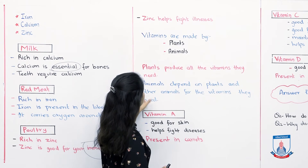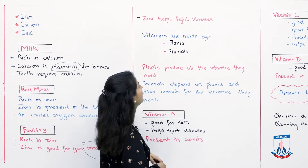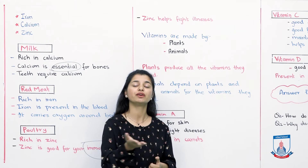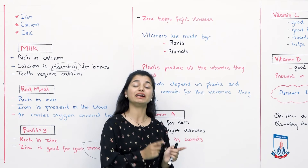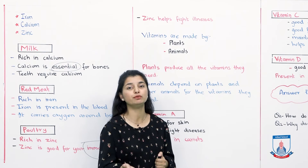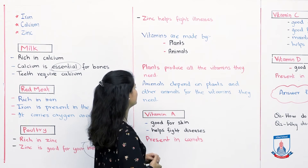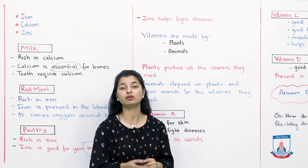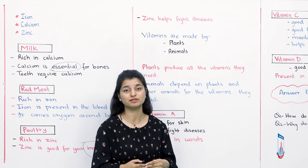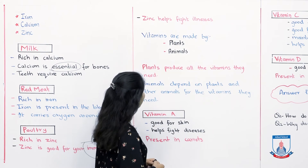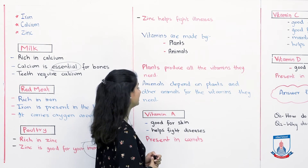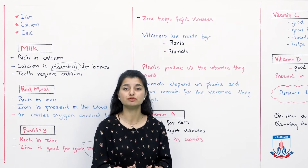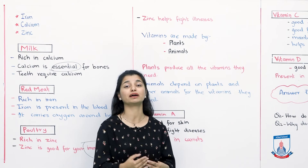Vitamins are made by plants and animals. Minerals come from the ground and water, but vitamins are produced by living beings. Plants produce all the vitamins they need themselves. Animals, on the other hand, produce some vitamins themselves, and for the rest they depend on eating other plants and animals.